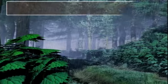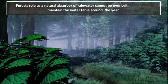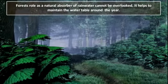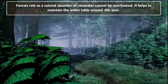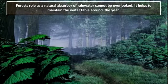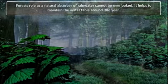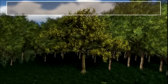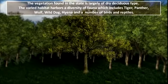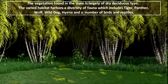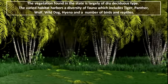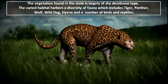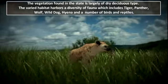The forest also acts as a natural absorber of rainwater and allows it to seep in, helping maintain the water table throughout the year. We can see different types of trees like teak, sal, neem, and tamarind. Moreover, a variety of mammals are also found in forests.